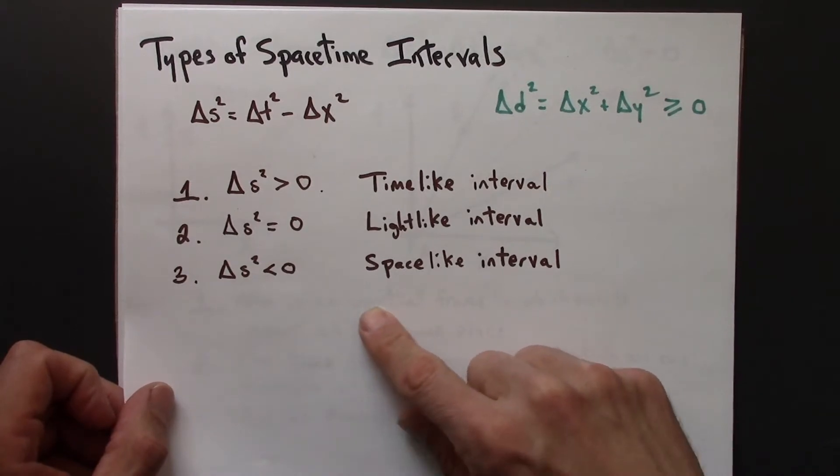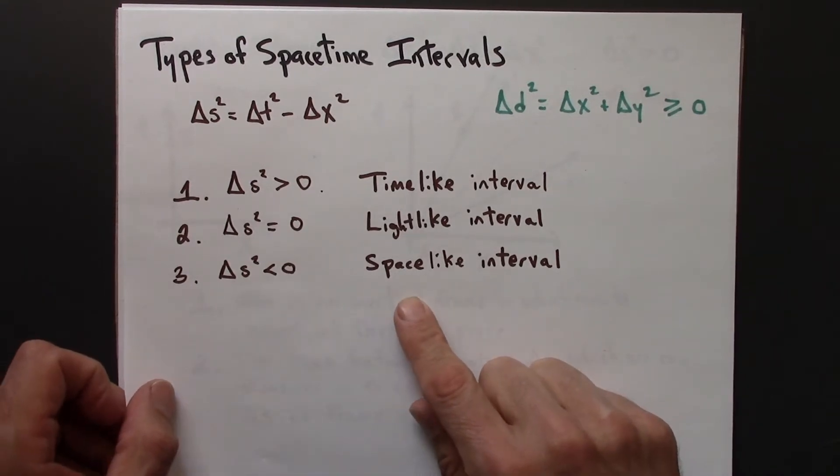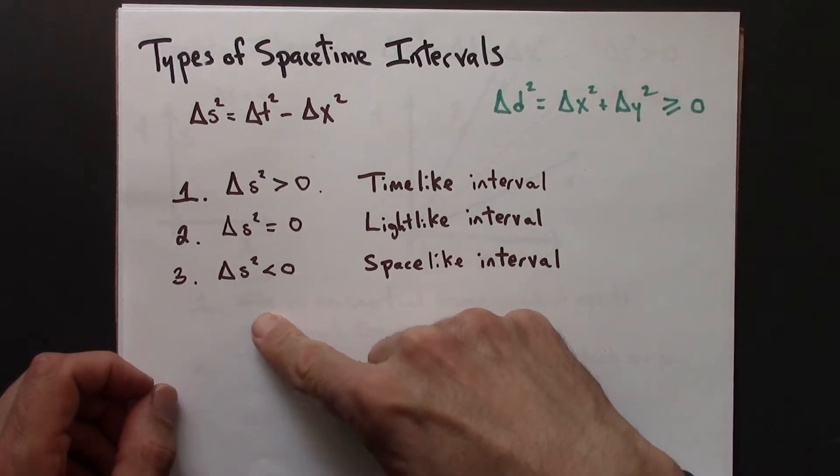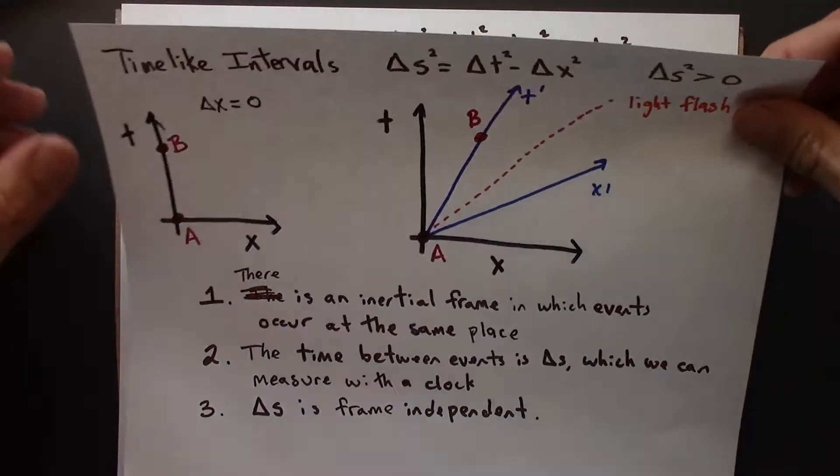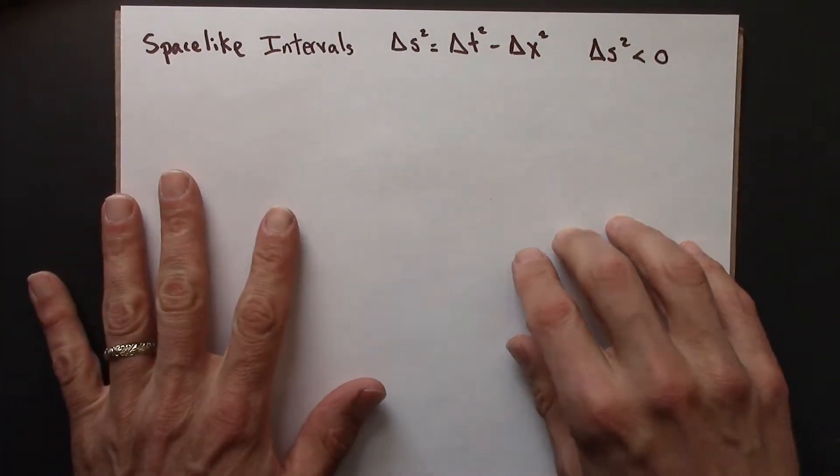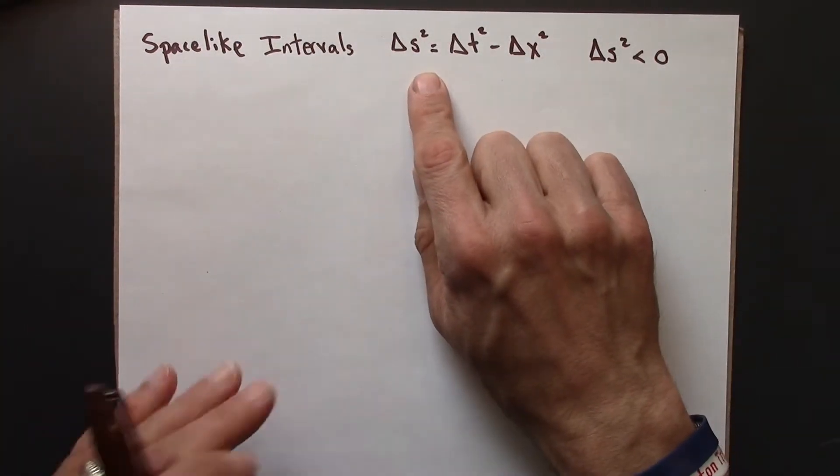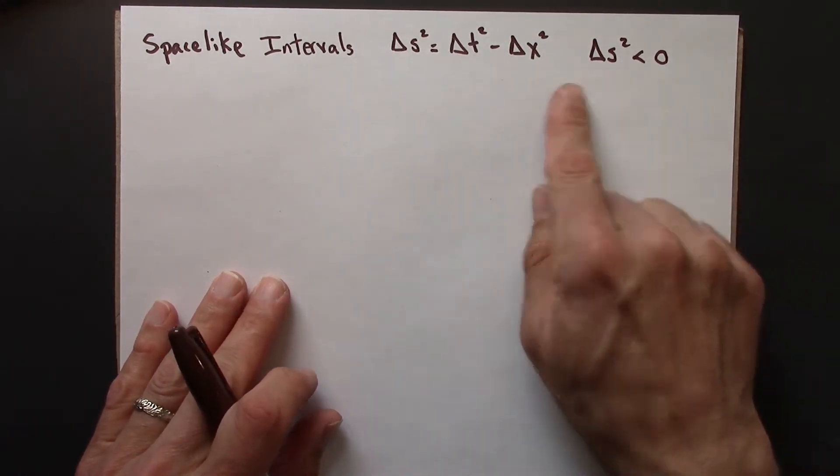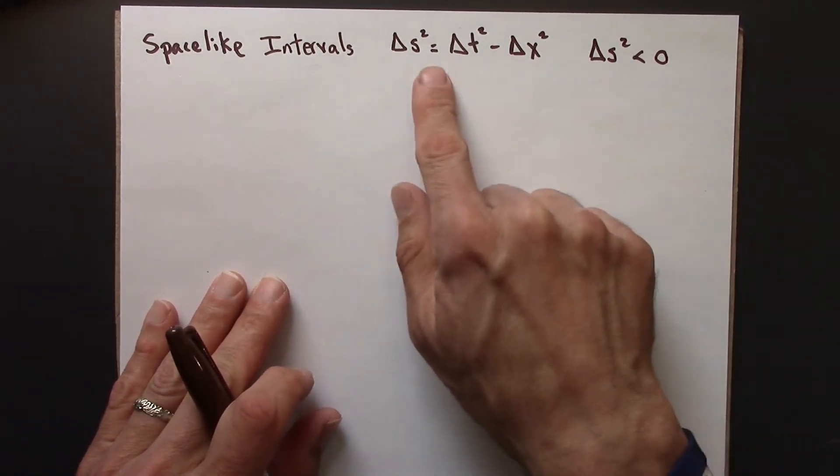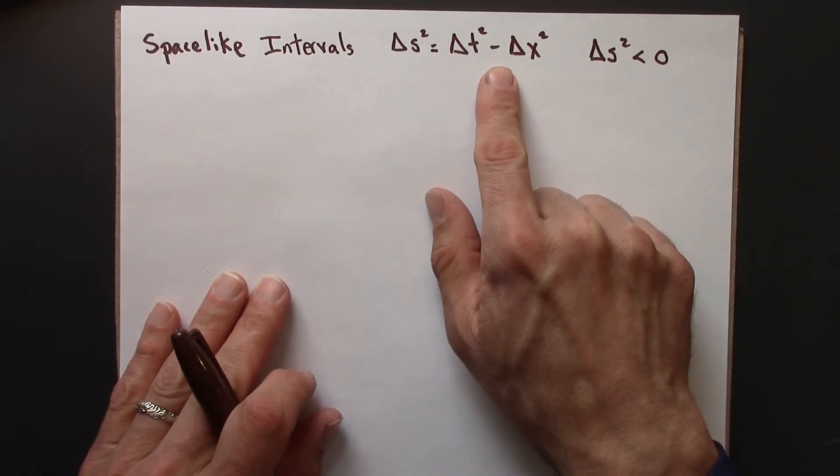And this is new in the sense that we haven't considered spacetime intervals for this case yet. So timelike and spacelike. For a spacelike interval, we have delta s squared less than zero. So that means that this quantity on the right-hand side is negative.